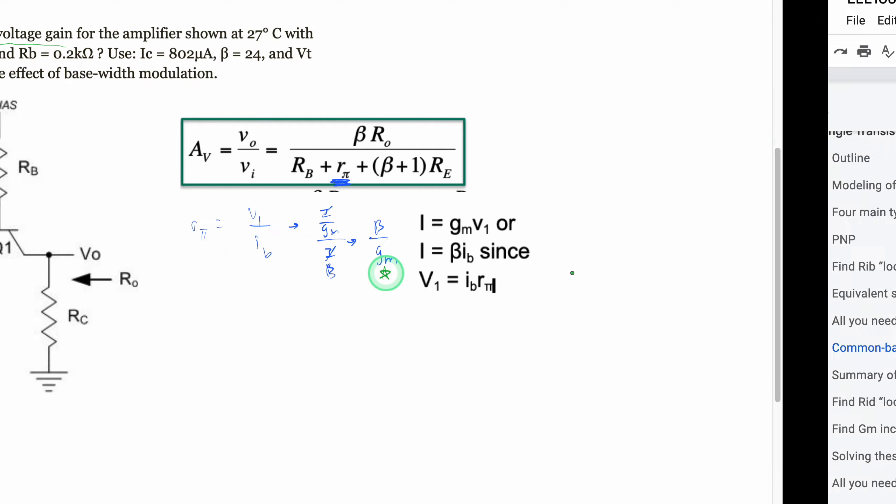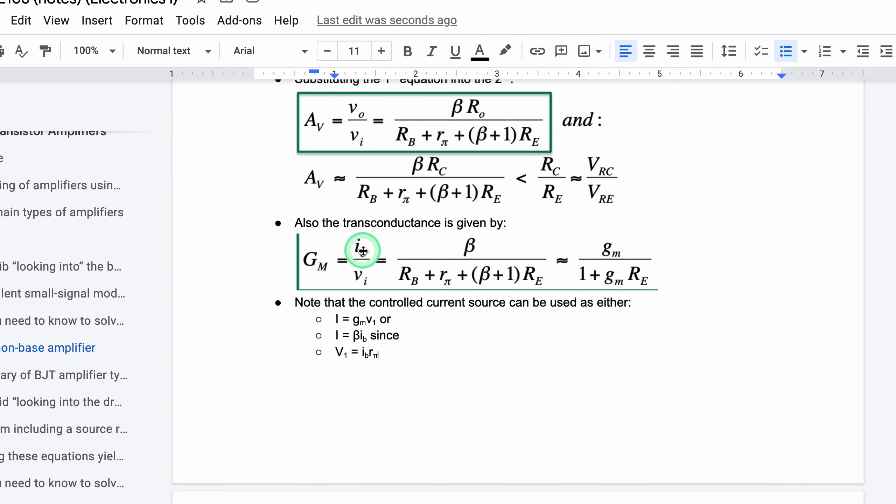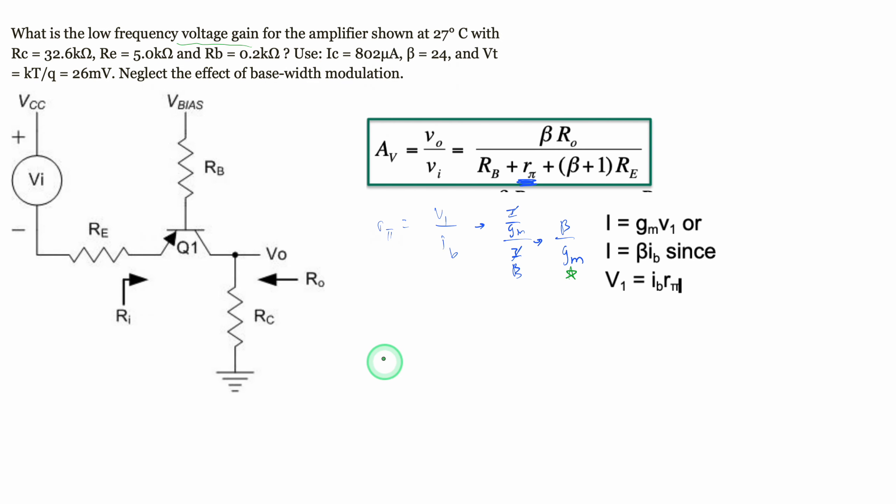If we look at our notes again, g_m is equal to I_0 over V_T. So we can write g_m equals I_0 over V_T. But for our equation here we are going to use I_C over V_T.